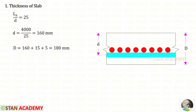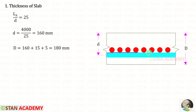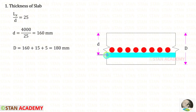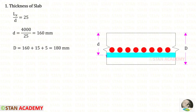Now we find the overall depth D. Taking a cross section of the slab along the short span, the rebar in the short span sits below the bars in the long span. The effective depth d is measured from the center of the short-span rebar to the top. To get overall depth D, we add the clear cover of 15 mm plus half the rebar diameter (10 mm diameter, so 5 mm). Adding these: 160 + 15 + 5 = 180 millimeter overall depth D.